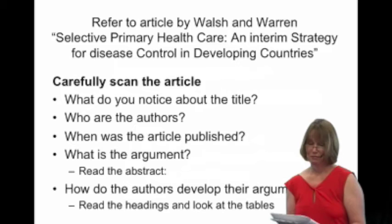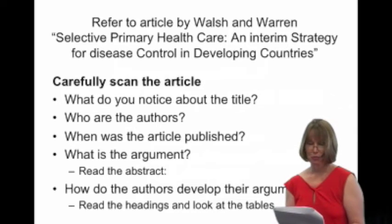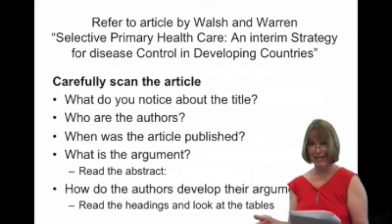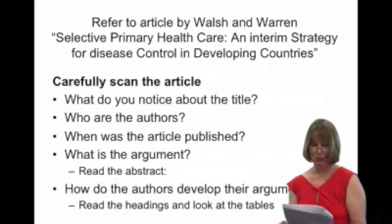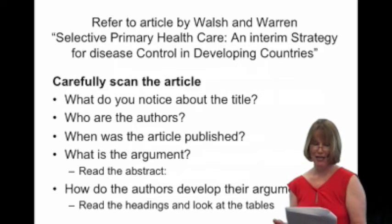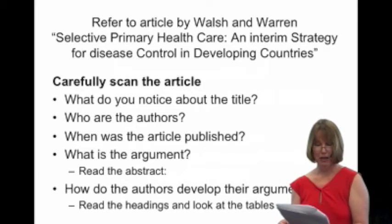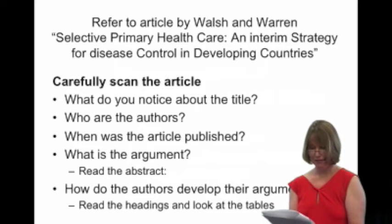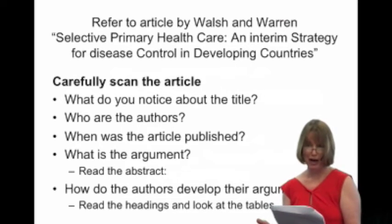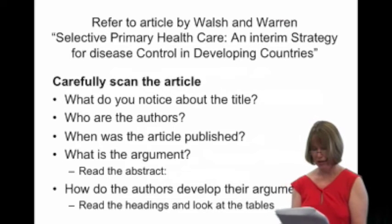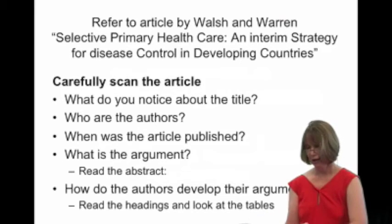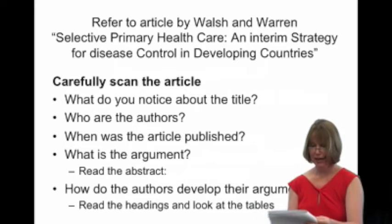Now let's look at Table 2. They've taken the four criteria for prioritisation and applied them to diseases found in the developing world. On the basis of these criteria, they've identified high priorities: diarrhoeal disease, malaria, whooping cough, bilharzia and neonatal tetanus, giving reasons for each. These are conditions with high prevalence, high mortality or high morbidity, and where effective control is possible.